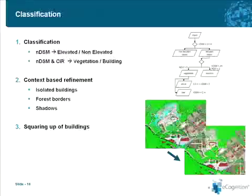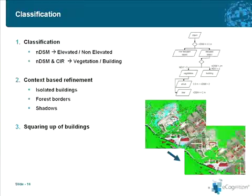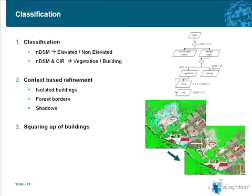Once this basic classification was available, a context-based refinement was applied, essentially optimizing the results in specific areas like isolated buildings and forest, also along the borders of forest and along shadow areas, so that the accuracy of the output result could be improved using local context functions.